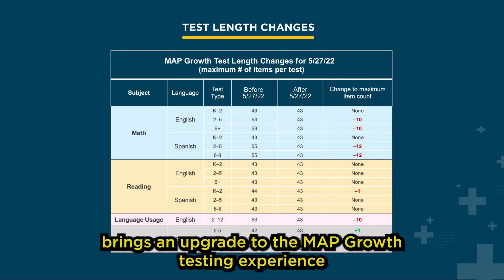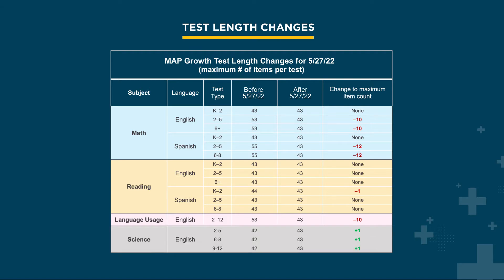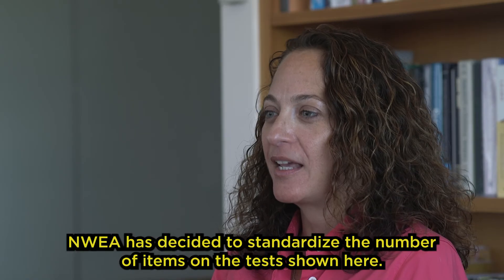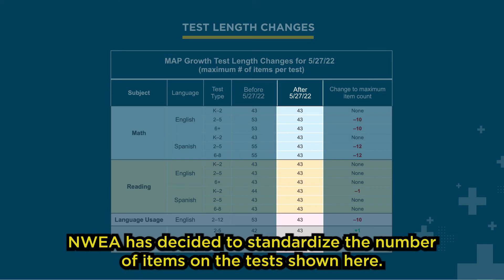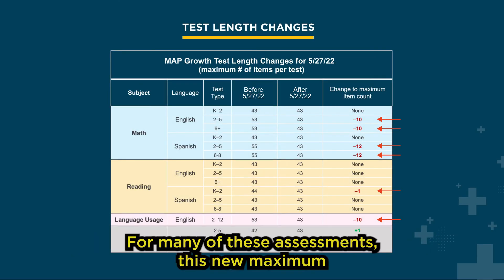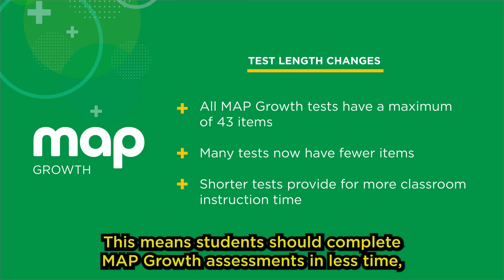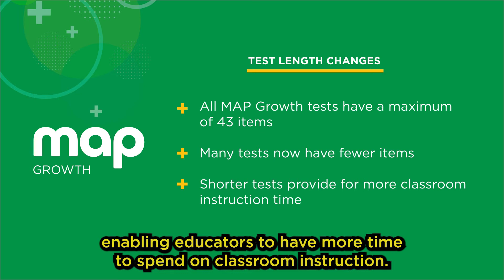Our next enhancement brings an upgrade to the MAP Growth testing experience. As part of ongoing efforts to improve testing for students and educators, NWEA has decided to standardize the number of items on the tests shown here. For many of these assessments, this new maximum of 43 items will decrease the length of the test, meaning students should complete MAP Growth assessments in less time, enabling educators to have more time to spend on classroom instruction.